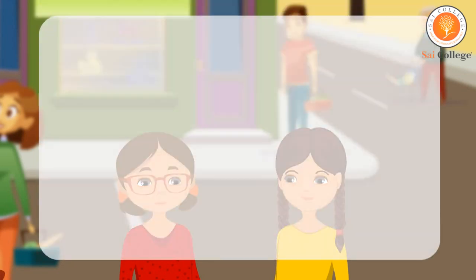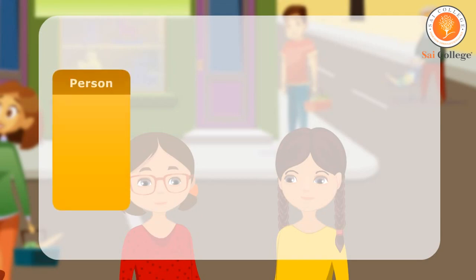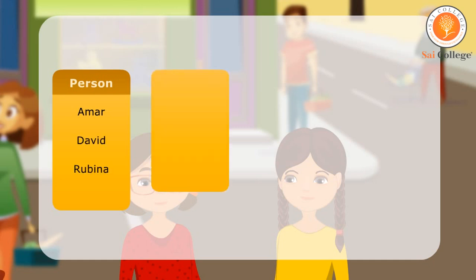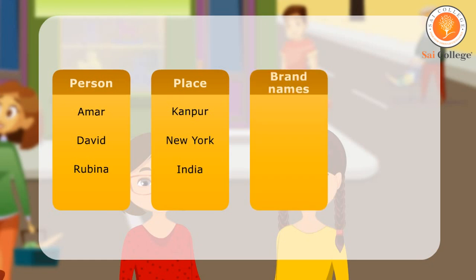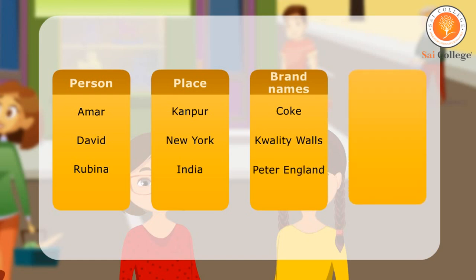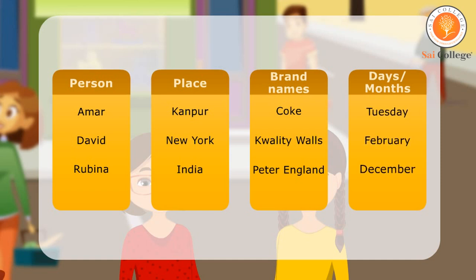Here is a list of some proper nouns. Person: Amar, David, Rubina. Places: Kanpur, New York, India. Brand Names: Coke, Walls, Peter England. Days or Months: Tuesday, February, December.